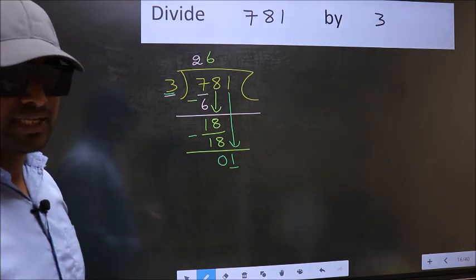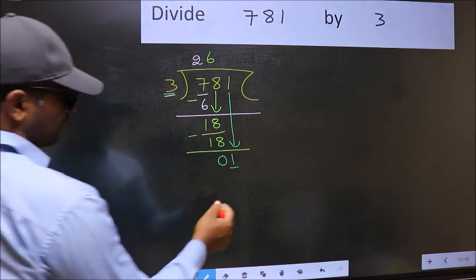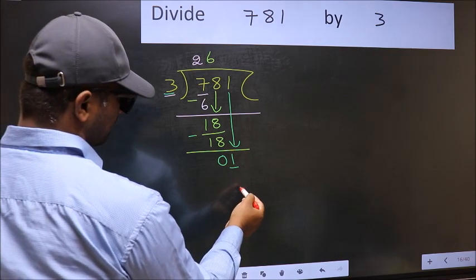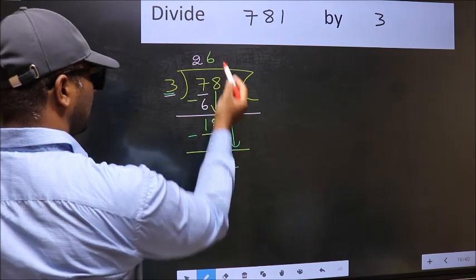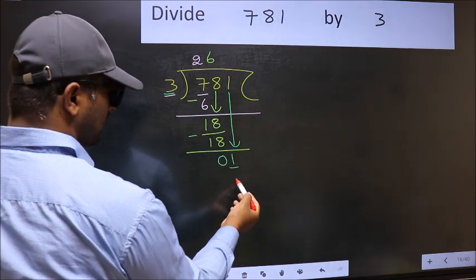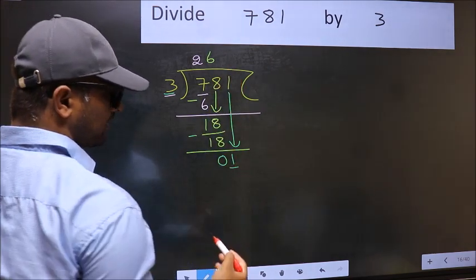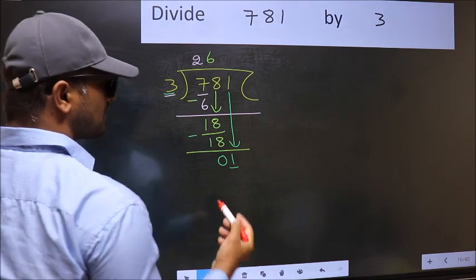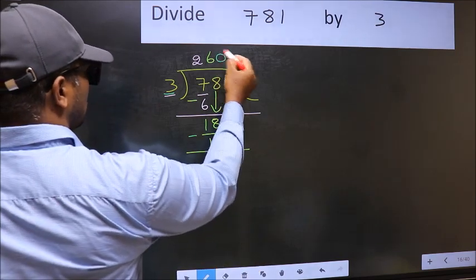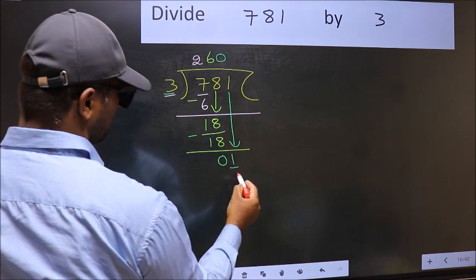what you should think of doing is, what number should we write here? If I take 1 here, I will get 3. But 3 is larger than 1. So what we should do is, we should take 0. So 3 into 0, 0.